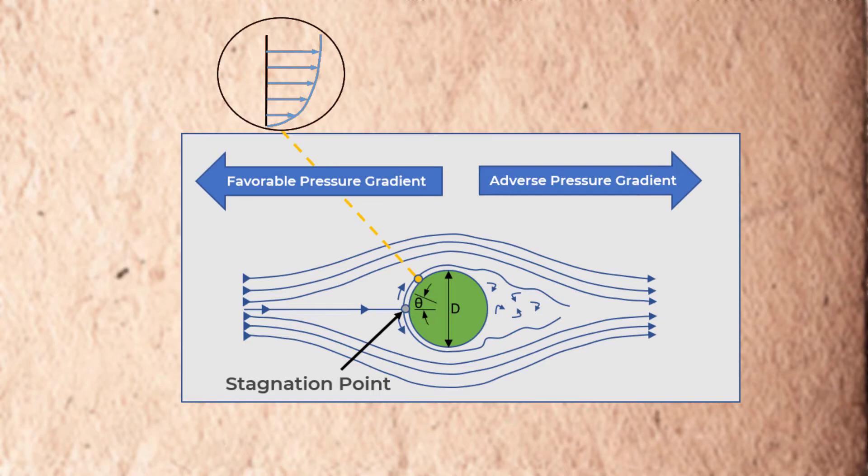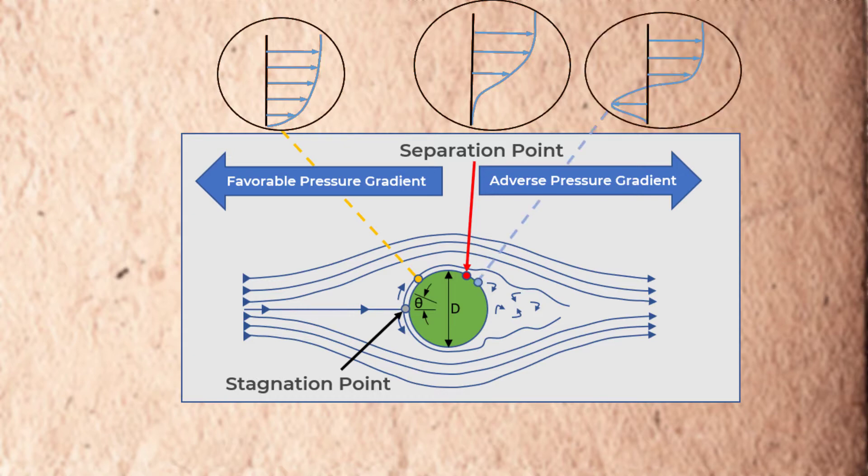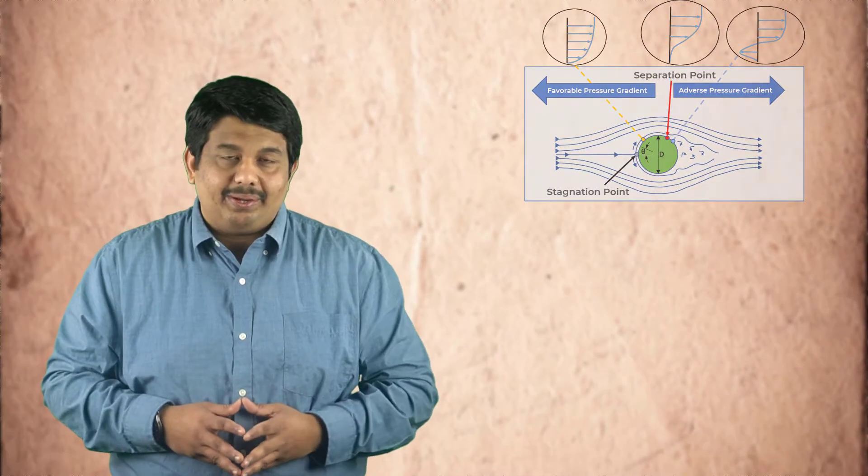At a further circumferential location, the flow momentum is not strong enough to overcome the adverse pressure gradient. As a result, the boundary layer detaches from the surface of the cylinder at a location called the separation point. The circumferential location of this separation point is strongly influenced by the nature of the boundary layer.